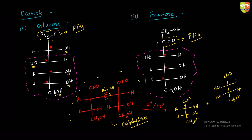A student asks: aren't glucose and fructose cyclic in nature, so aren't these the open-chain structures drawn post-hydrolysis? The instructor clarifies: these are the open-chain forms. Glucose, fructose, and mannose exist in equilibrium — you get all three forms. That is also why fructose shows a Tollens test. We will discuss the cyclic forms later. For now, understand that with an ether linkage, hydrolysis gives polyhydroxy aldehyde, confirming it is a carbohydrate.